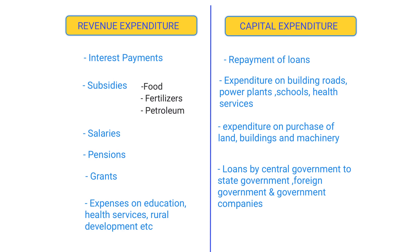Under capital expenditure, we also have loans which the central government gives to state governments, foreign governments, and public sector companies — as these create an asset for the government. Investment in shares by the government also comes under capital expenditure. From this section, the questions that can be expected are very direct, such as: does interest payment come under revenue expenditure or capital expenditure? So knowing which item falls under which category is important for exams.